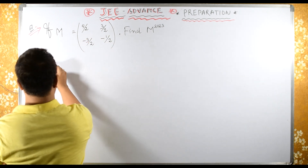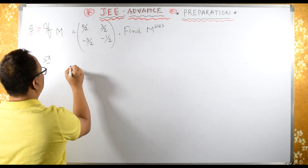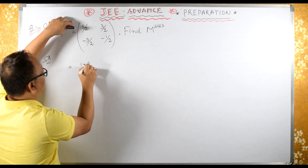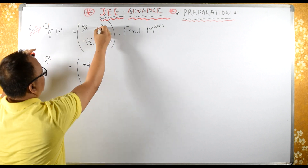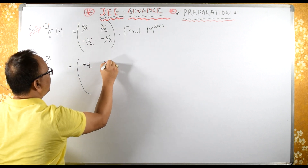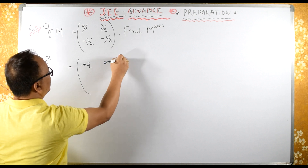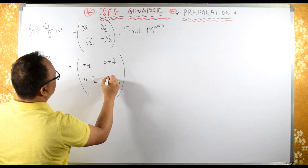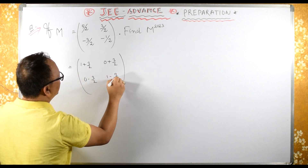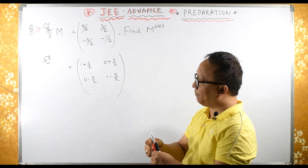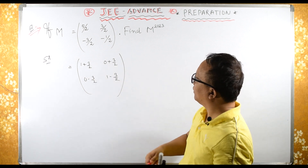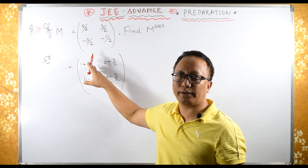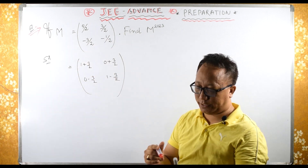Let's see this solution. 5/2 can be written as 1 plus 3/2. So 3/2 can be written as 0 plus 3/2, and this is same as 0 minus 3/2. Here, this is same as 1 minus 3/2. So what I am doing is I am converting everything into the form of 3/2, so that I can make some pattern.